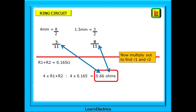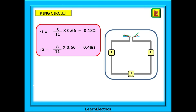We now have everything we need to complete the calculation. Multiply the numbers out to find little r1 and little r2 on their own. Little r1 is 3 times 0.66 divided by 11, which is 0.18 ohms. For little r2, 8 times 0.66 divided by 11 gives an answer of 0.48 ohms.